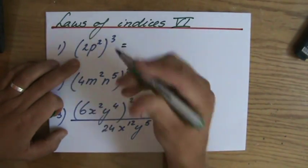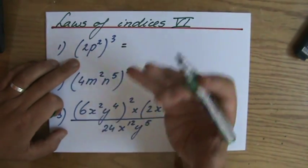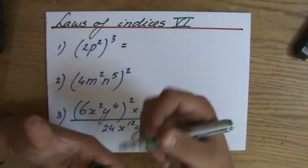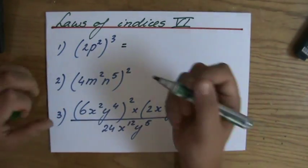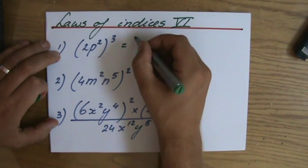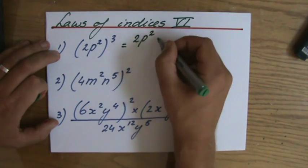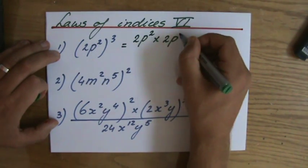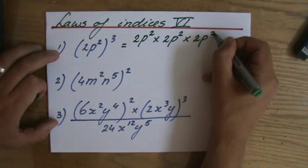This means, because it's vital, it's essential that you understand what this means rather than just applying a law without thinking. This means 2p to the power of 2 times 2p to the power of 2 times 2p to the power of 2.